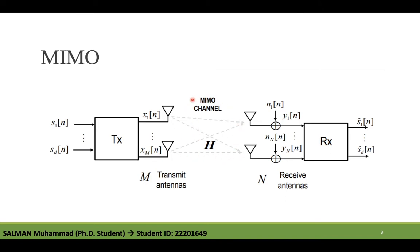The MIMO channel experiences degrading phenomena like reflection, refraction, and scattering. These affect wireless signals when they travel from transmitter to receiver, causing distortion. The use of multiple antennas at both sides opens up a new spatial domain that can be exploited to increase transmission rate, system robustness, and signal-to-noise ratio.